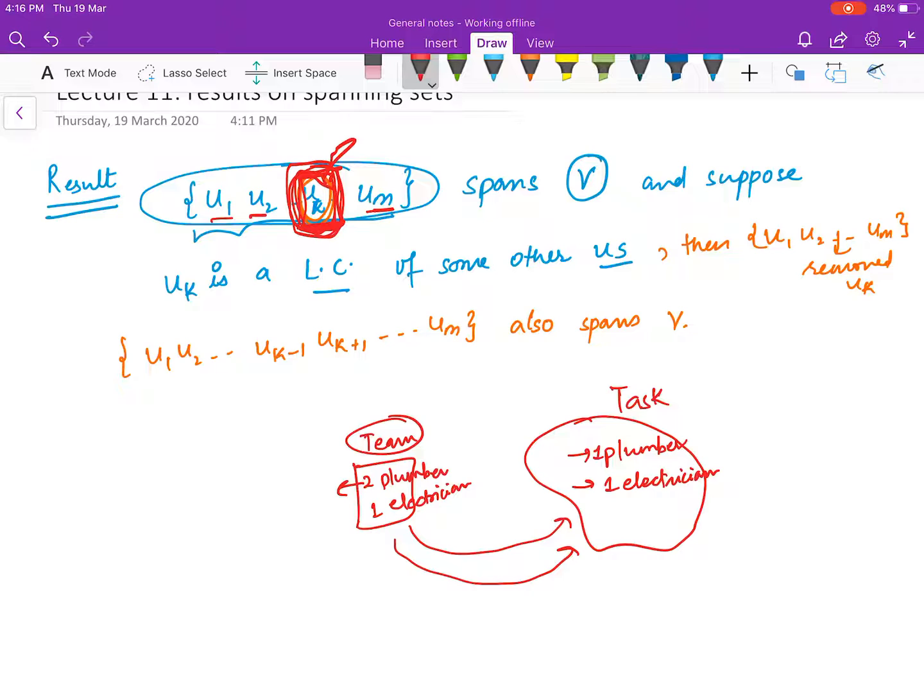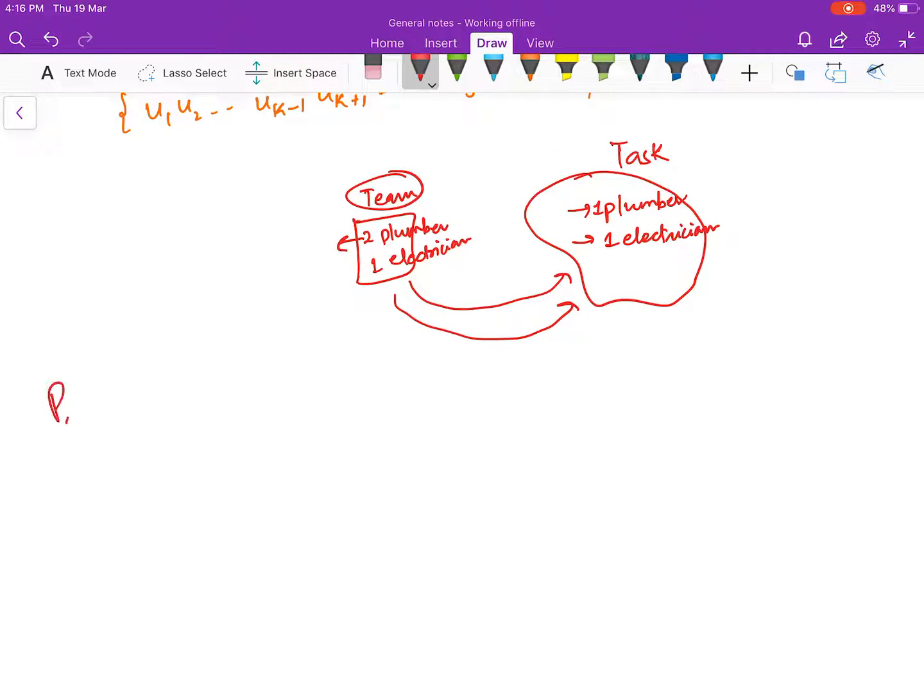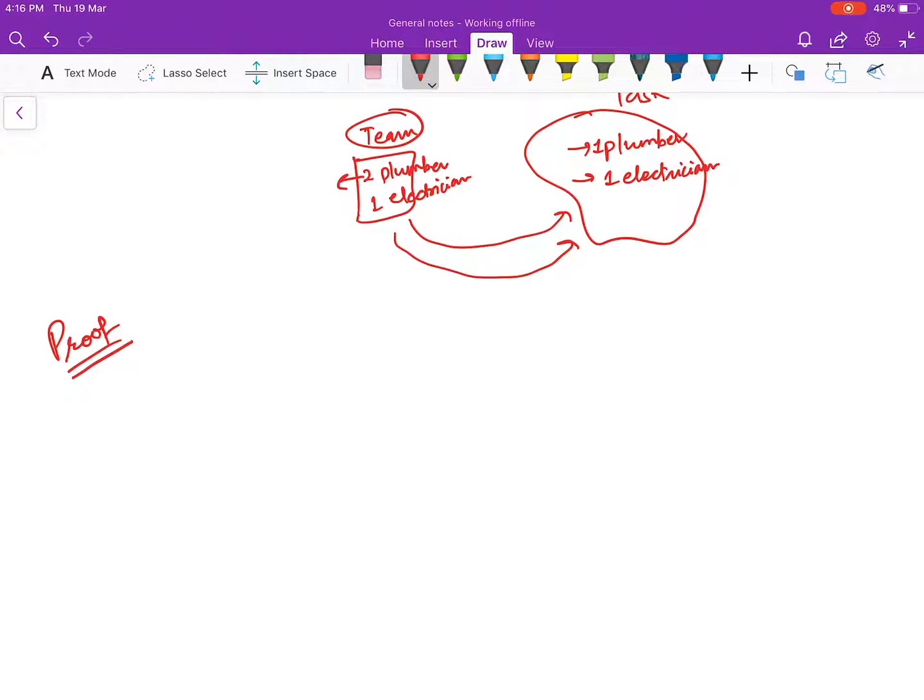Let us prove it mathematically. So for the proof: you are saying that u1, u2, ..., um spans V, so it means that given any element v of V, you can find constants.